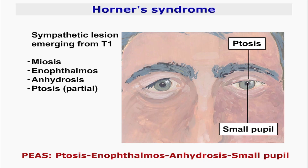When assessing the eyes, check for evidence of Horner's syndrome. Horner's syndrome develops as a result of paralysis or compression of the sympathetic nerves which arise from the cervical spine via the T1 nerve root. These nerves supply the face and pupil, causing partial ptosis of the upper eyelid, enophthalmos or sunken eye, anhydrosis or dry face, and miosis or small pupils.